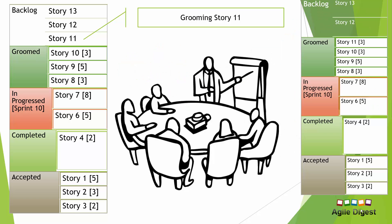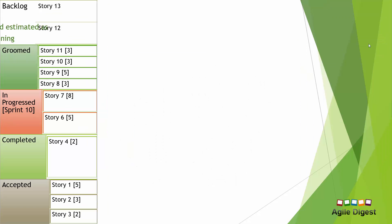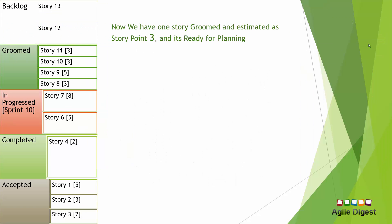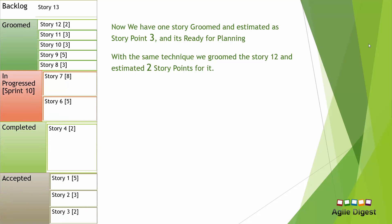Now you can see the backlog on the right-hand side showing what it looks like after grooming. Initially story 11 was being groomed, and now after grooming it has moved to the groomed state, estimated at story point 3. This is how we estimated one story. Similarly, story 12 was also estimated — at story point 2.